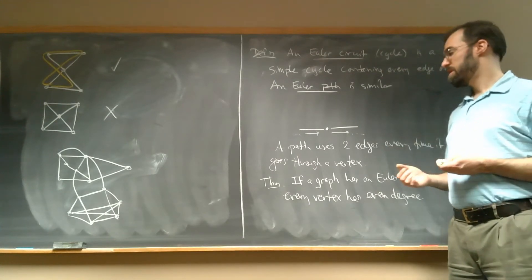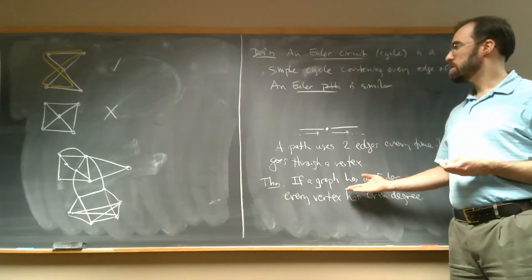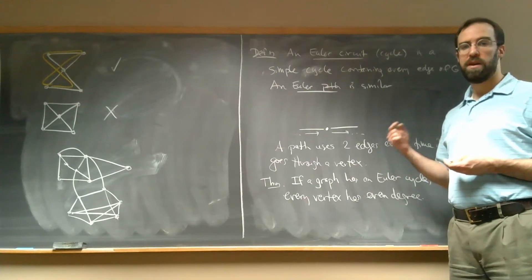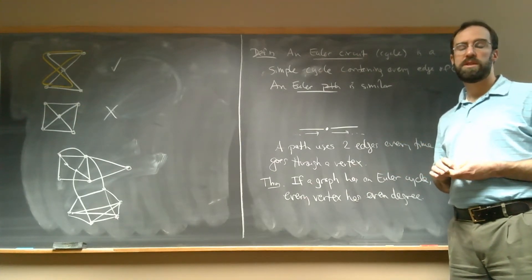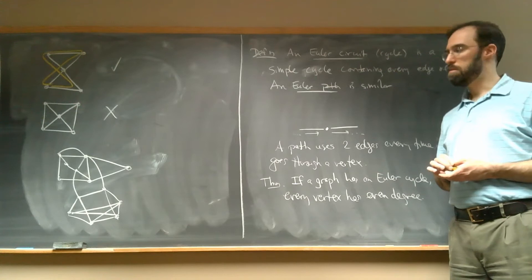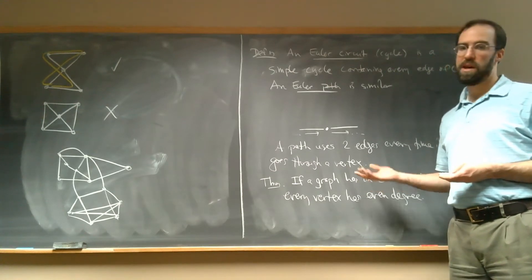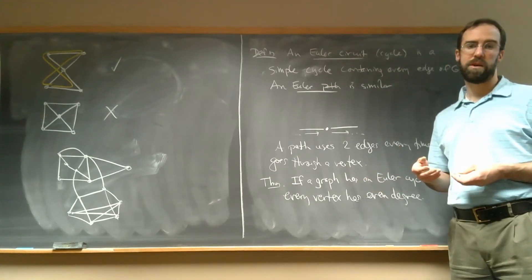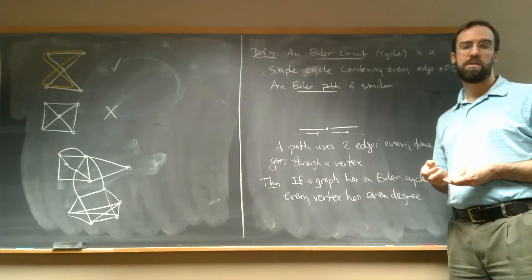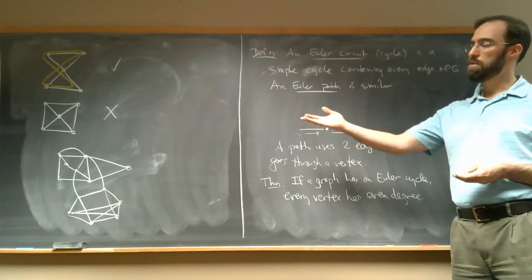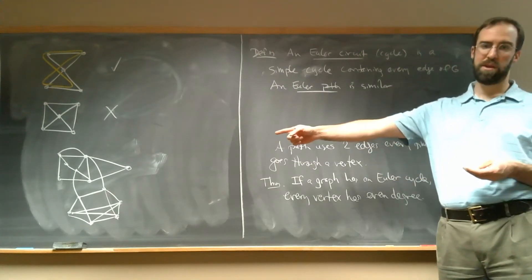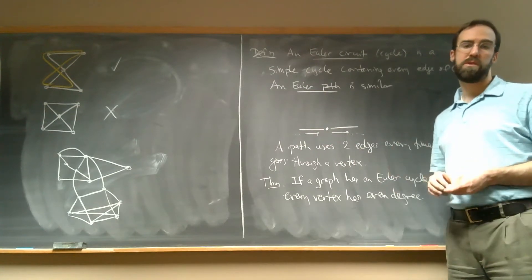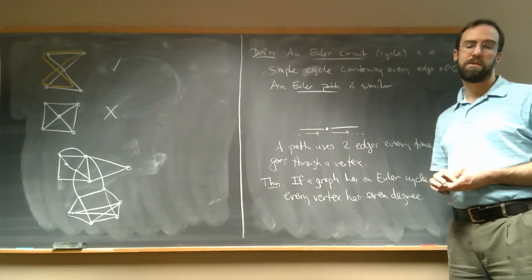In the previous video, we ended with the theorem that Euler proved: any graph with an Euler cycle must have all vertices with even degree. But that doesn't necessarily tell us how to find an Euler cycle if one exists, or if we have a graph where all the vertices do have an even degree, like this one over here, do we know for sure that an Euler cycle has to exist, or might it not exist?